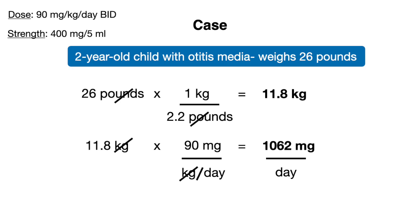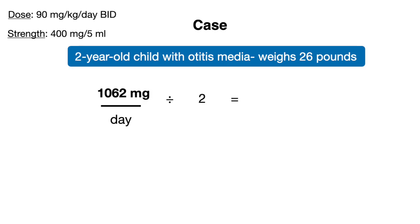Obviously we're not going to give the child this entire amount in one dosage, so we need to divide by two, given that the dosage is required to be administered twice a day. This gives us 531 mg per dose — the amount we need to give with each dosage on a twice-a-day schedule.